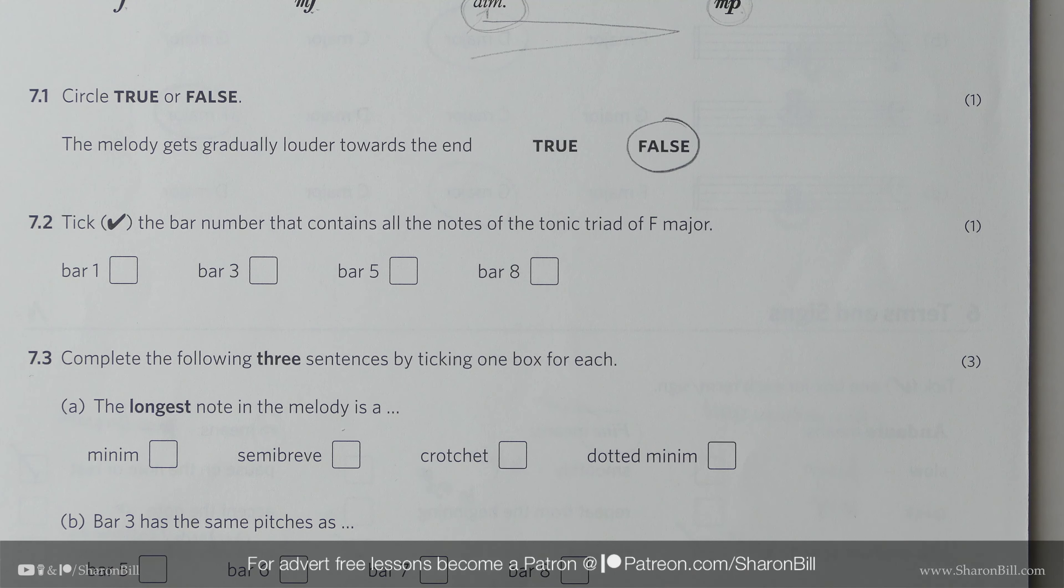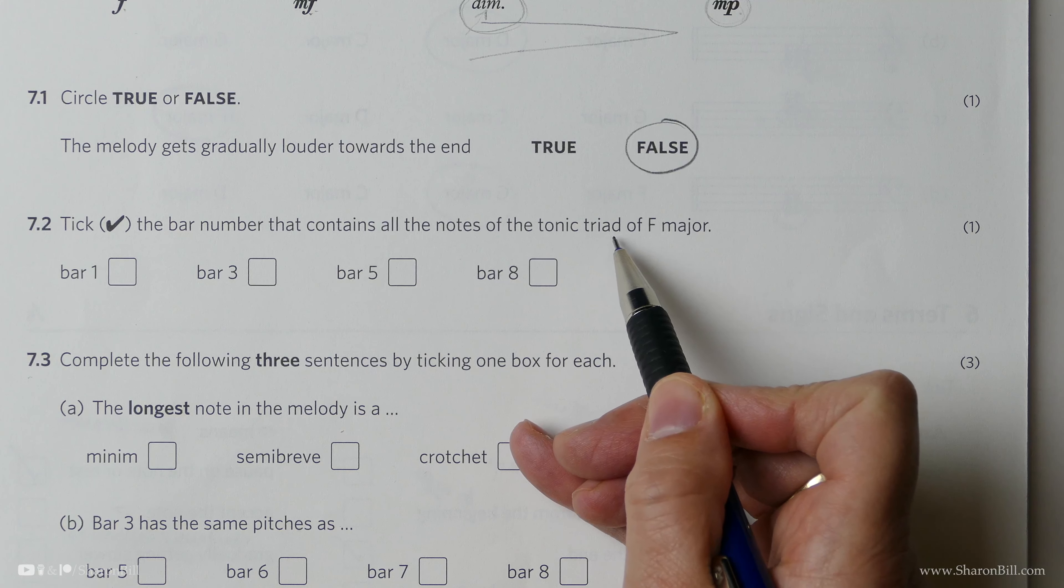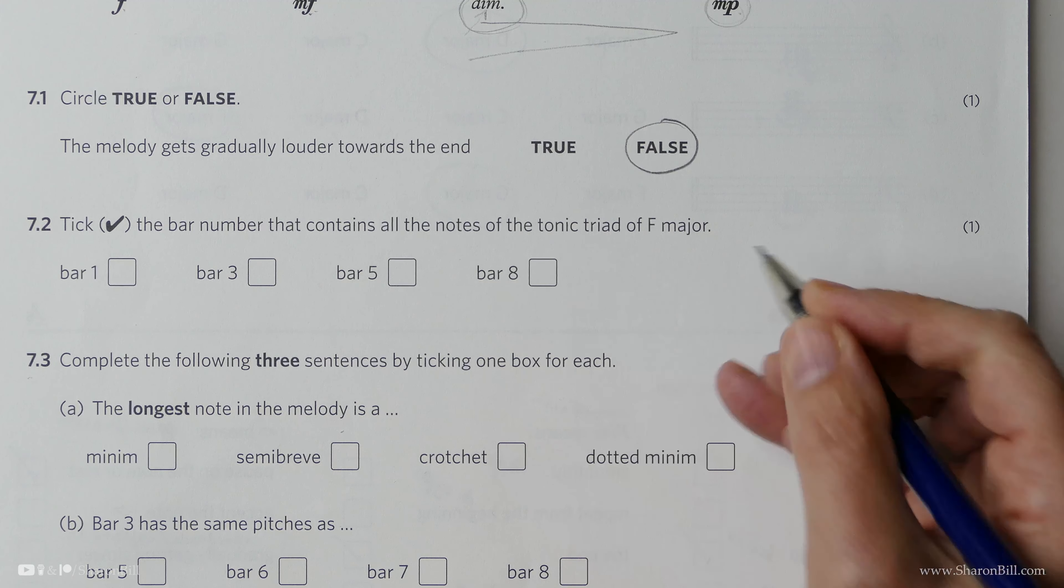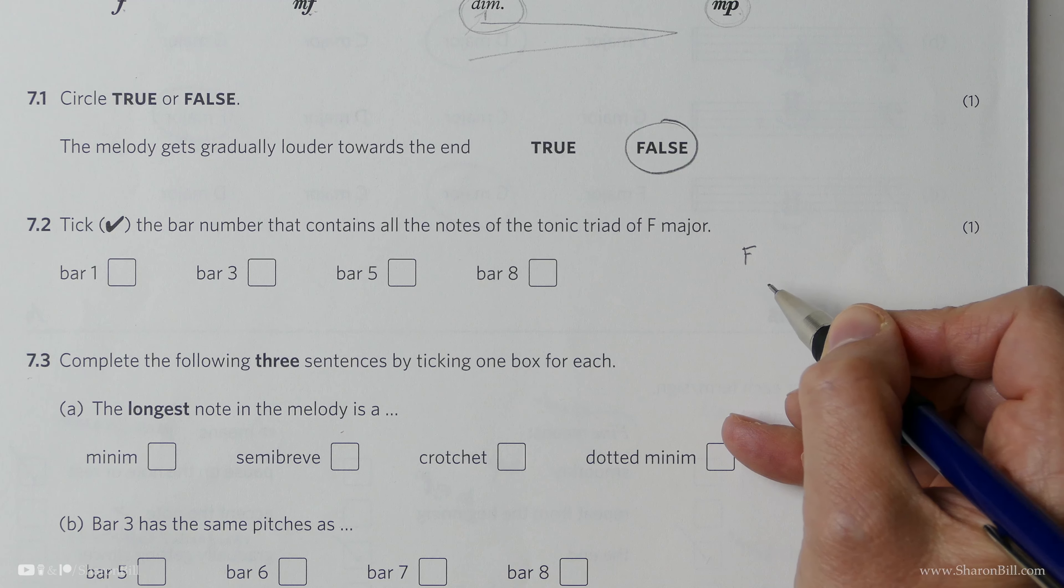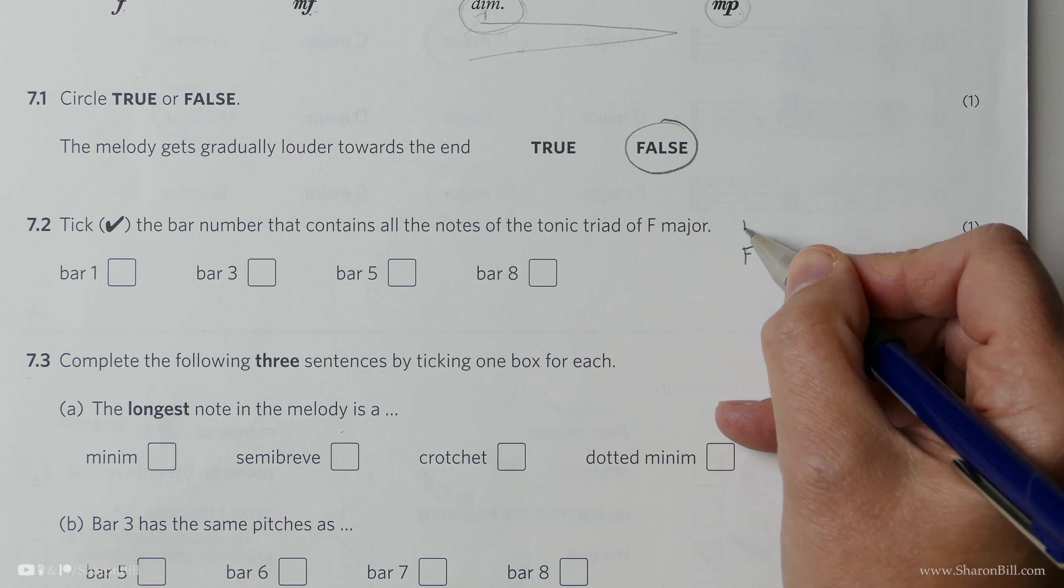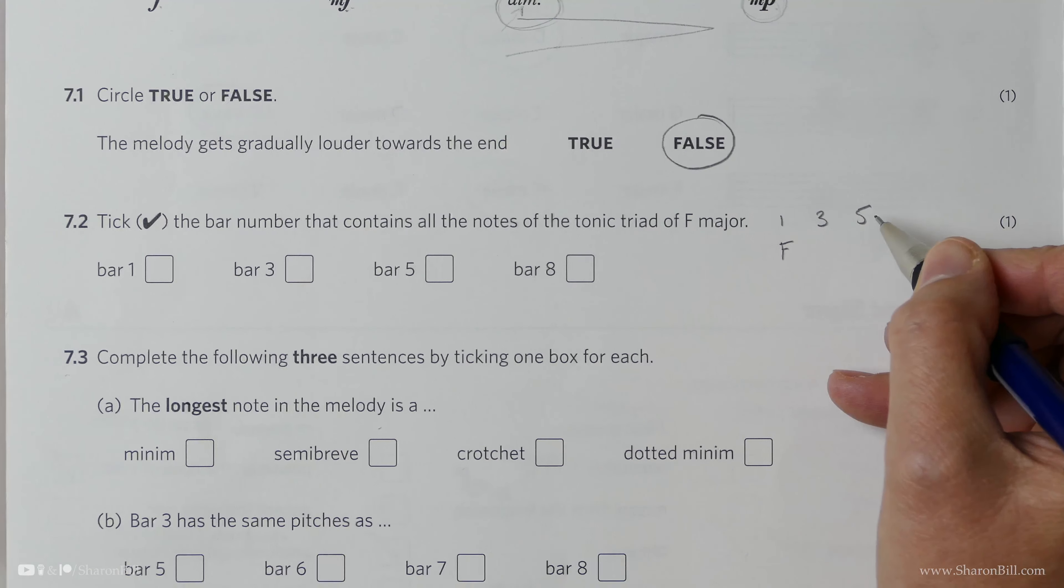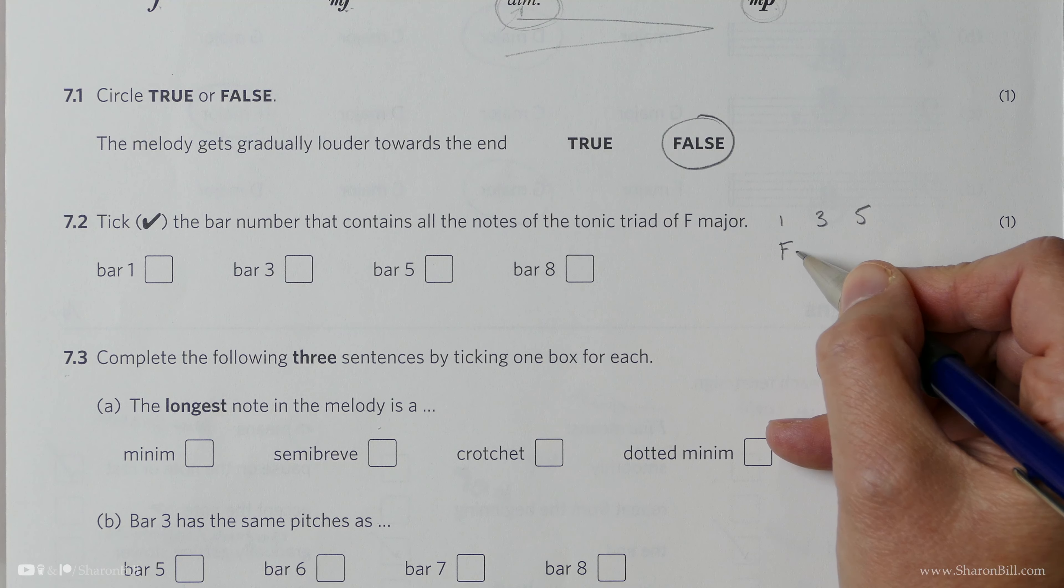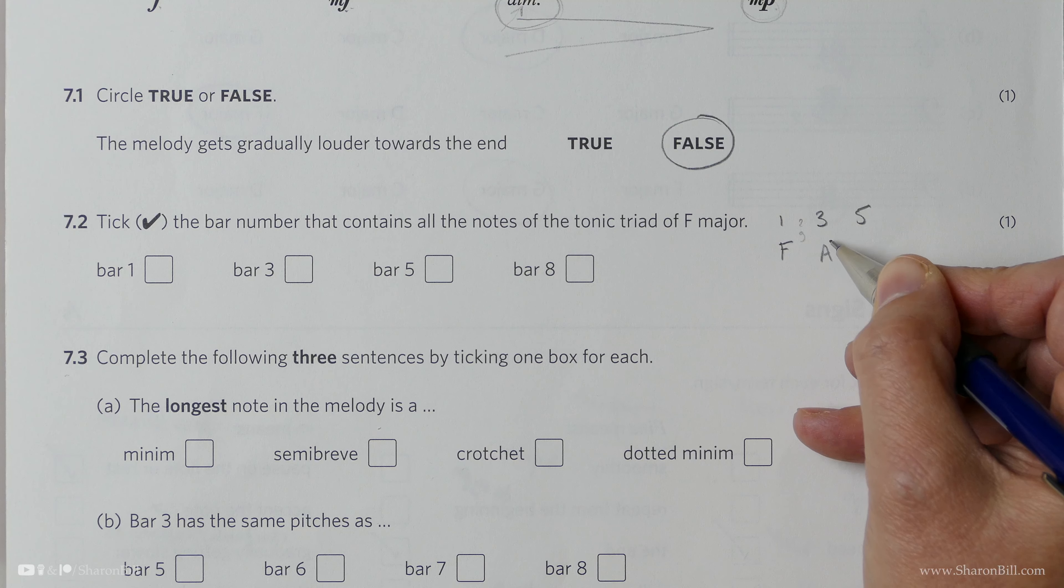We need to tick the bar number out of these options that contains all the notes of the tonic triad of F major. So let's just think, what is it that we're actually looking for? So in F major, F is the tonic, and the tonic triad is built up of the first, the third, and the fifth degrees of the scale. And so, F is 1, then G is 2, A is 3,